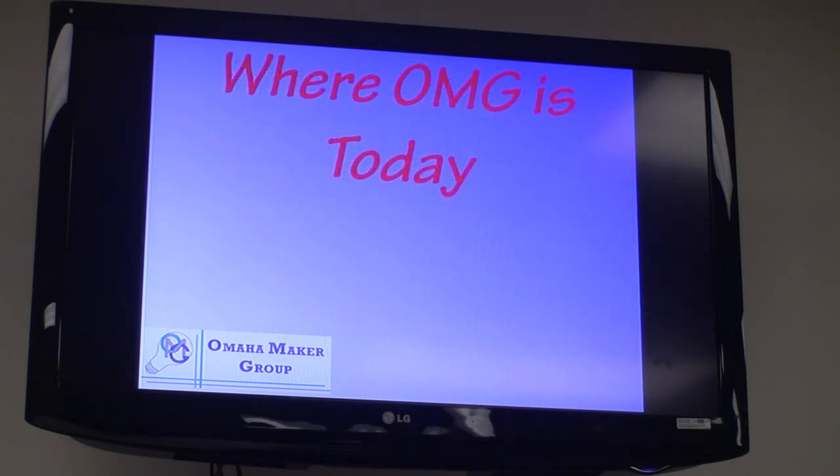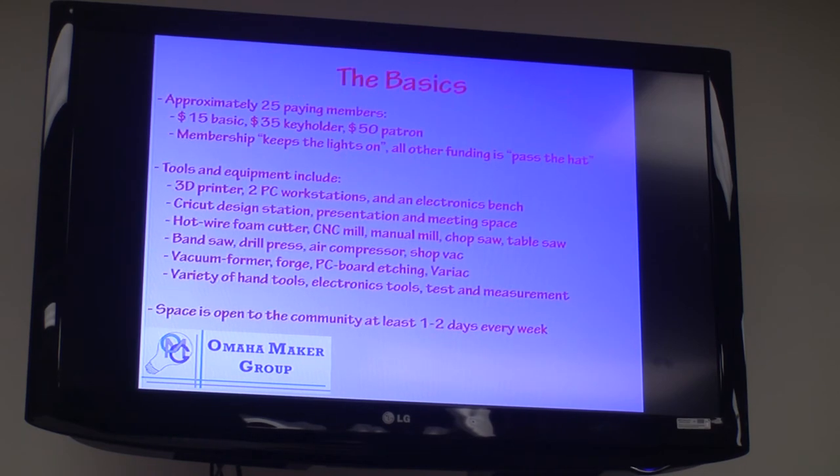Which brings us to where we are today. We have about 25 paying members. We have a three-tier membership structure. $15 basic membership per month. $35 key holder, gets you a key to the space, per month. And then $50 patron, which basically gets you the key, gets you a locker, gets you much adoration from everybody else. The way our membership structure is set, the dues cover the expenses to keep the lights on. Keep the doors open and keep the lights on.